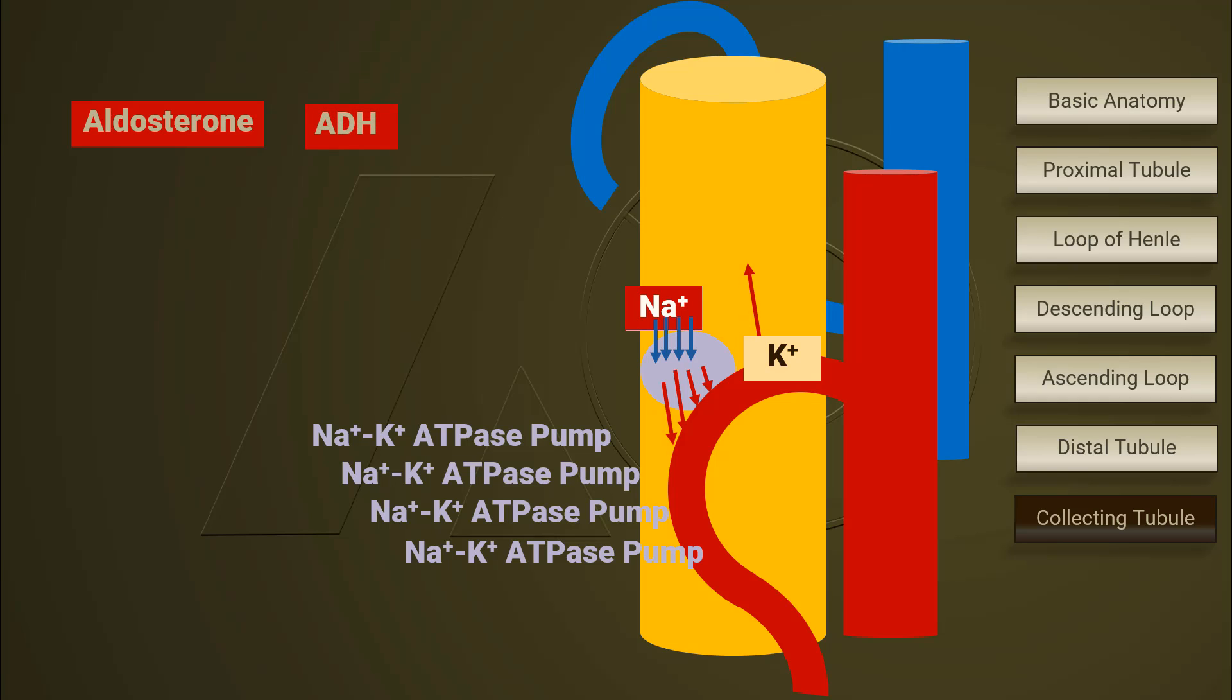Anti-diuretic hormone binds to its receptors here to facilitate water reabsorption. In other words, aldosterone moves the electrolytes and ADH moves water.